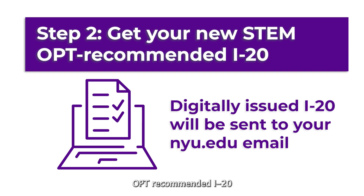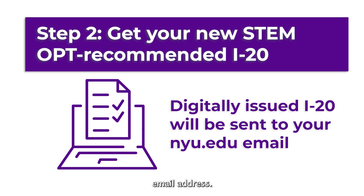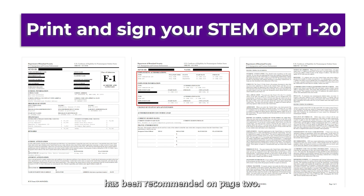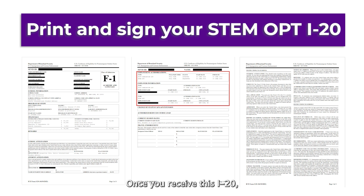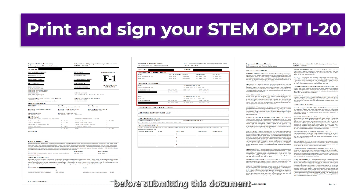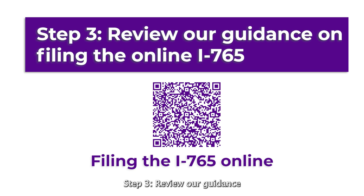Step 2: Get your new STEM OPT recommended I-20. Once OGS issues your STEM OPT recommended I-20, we will send an email to your NYU.edu email address. Attached to this email will be your new I-20 reflecting that STEM OPT has been recommended on page 2. Once you receive this I-20, you must print all three pages and sign and date the first page by hand before submitting it to the government.